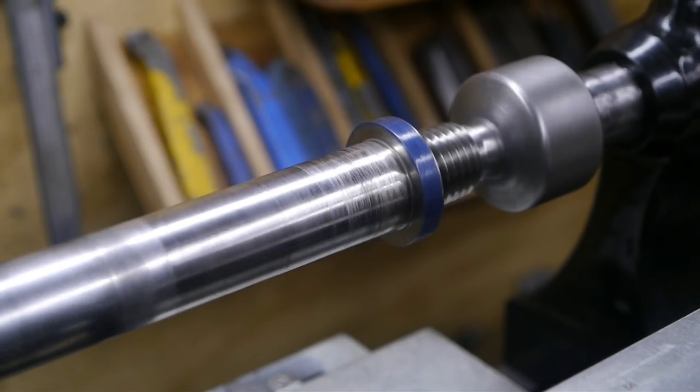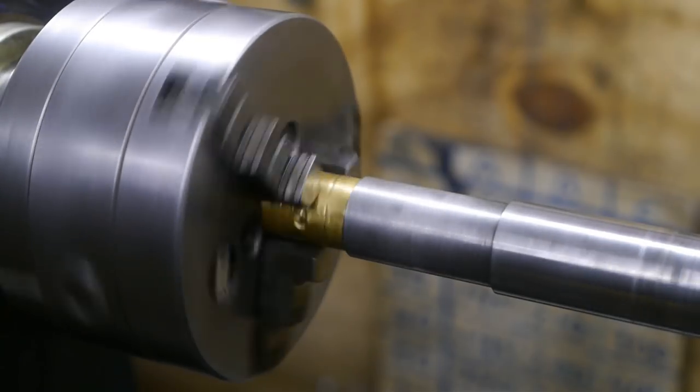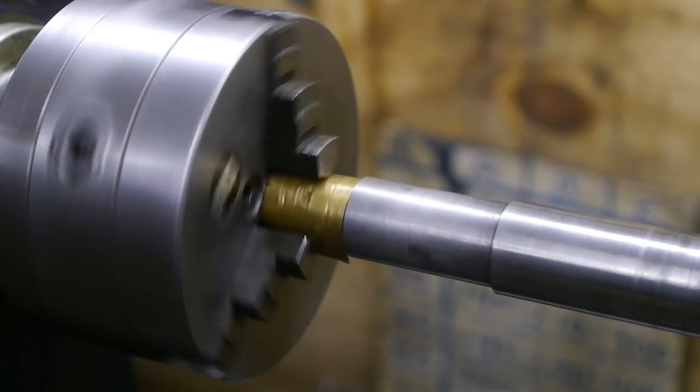As you can see I've got the spindle mounted and I'm using a bit of copper shim stock to protect the thread on the end of the spindle.